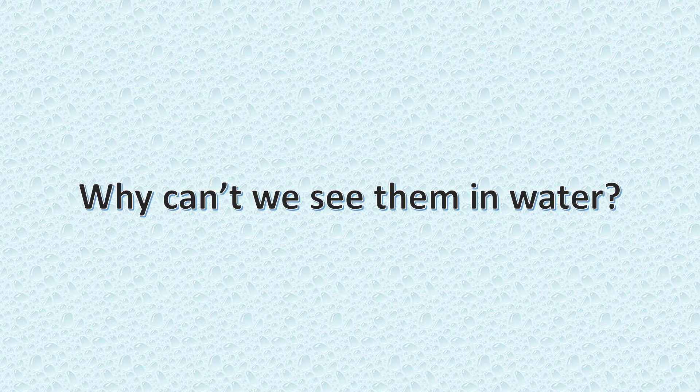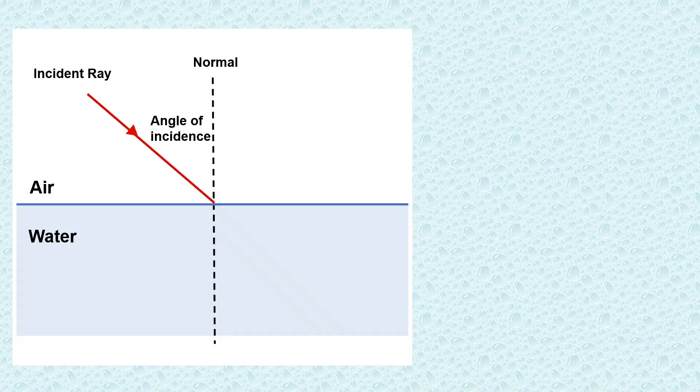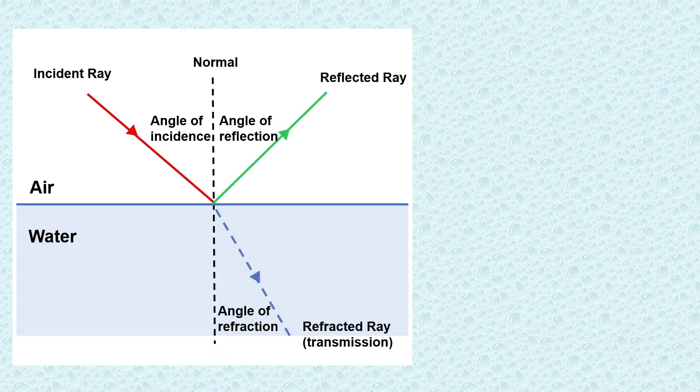You may then ask, why can't we see them in water? Normally, when light is shown onto a transparent material, some of the light is reflected from the surface, while some of it is transmitted due to the difference in index of reflections of the two media.